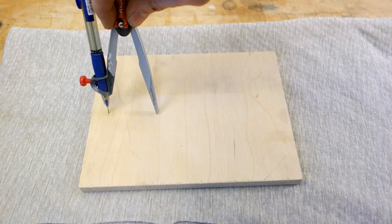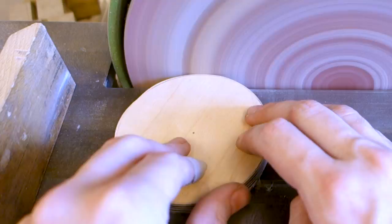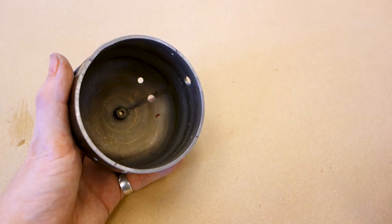Now we need a bottom for the base. The easiest is just to measure the inside diameter of the base, mark the corresponding diameter on a piece of plywood, cut it out and sand it down until it fits properly.